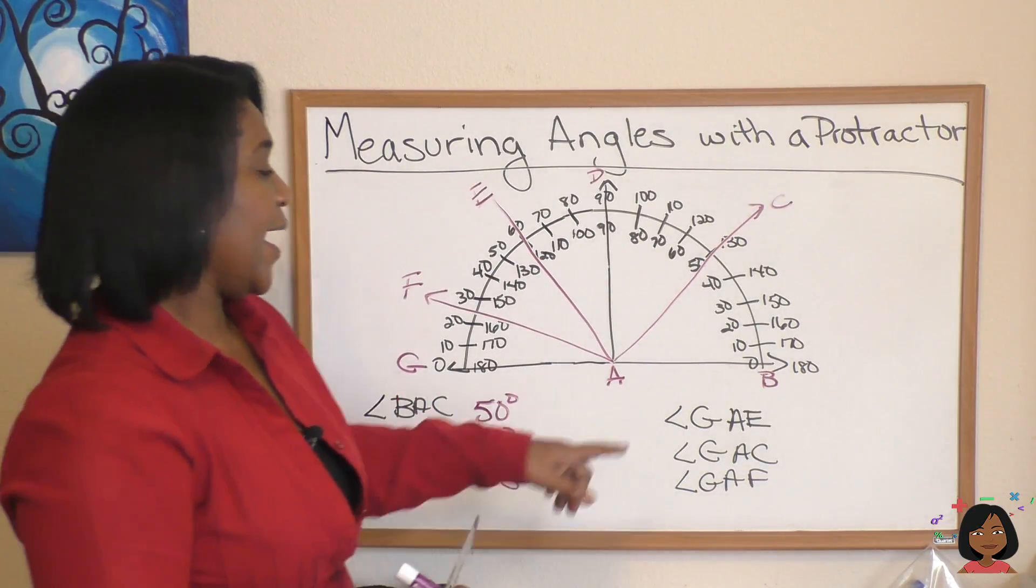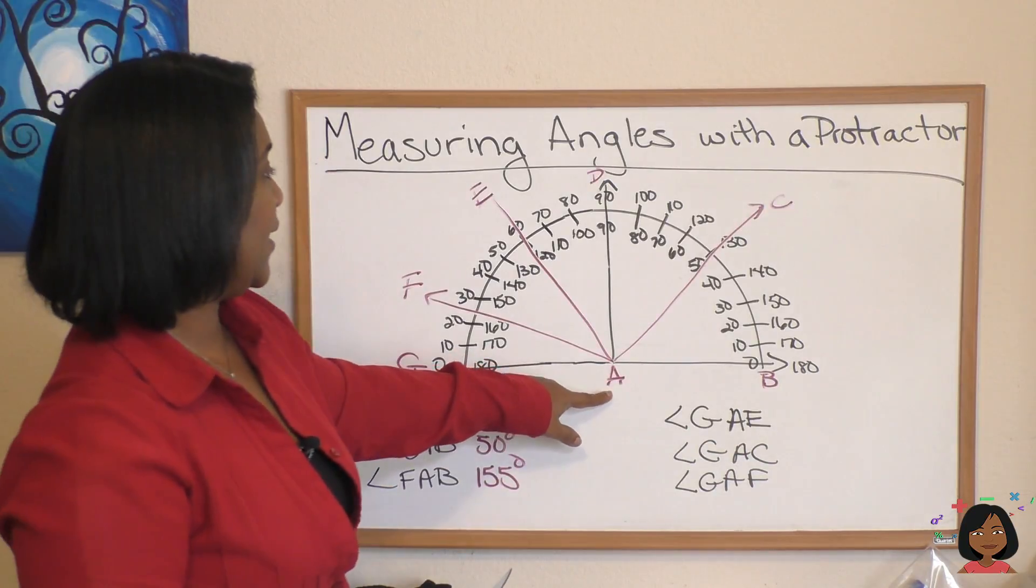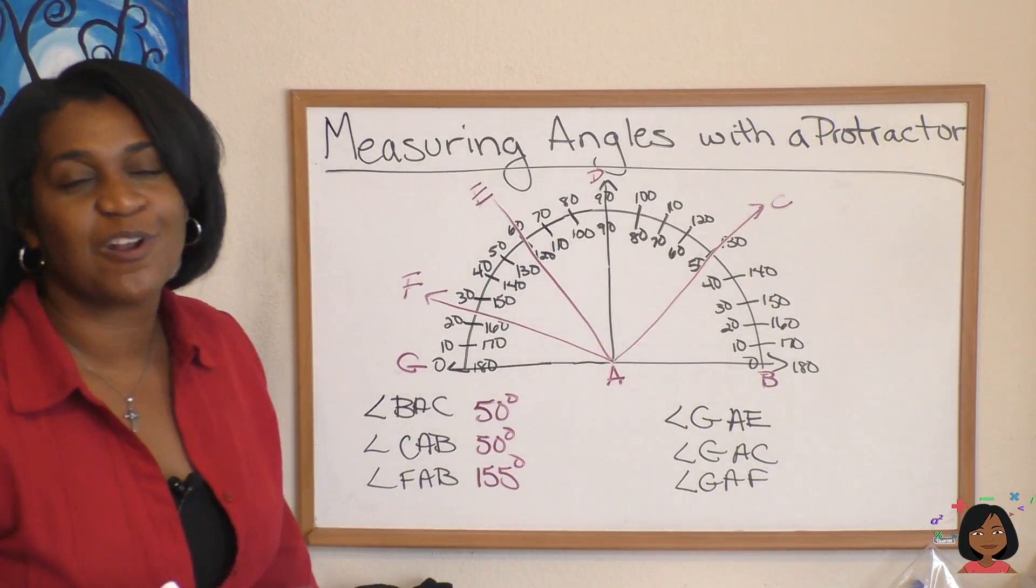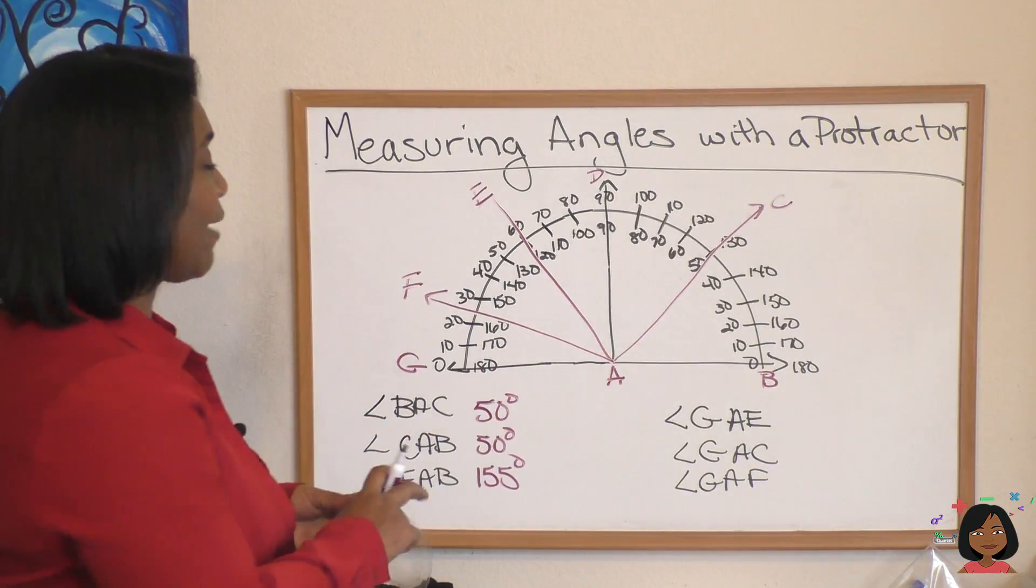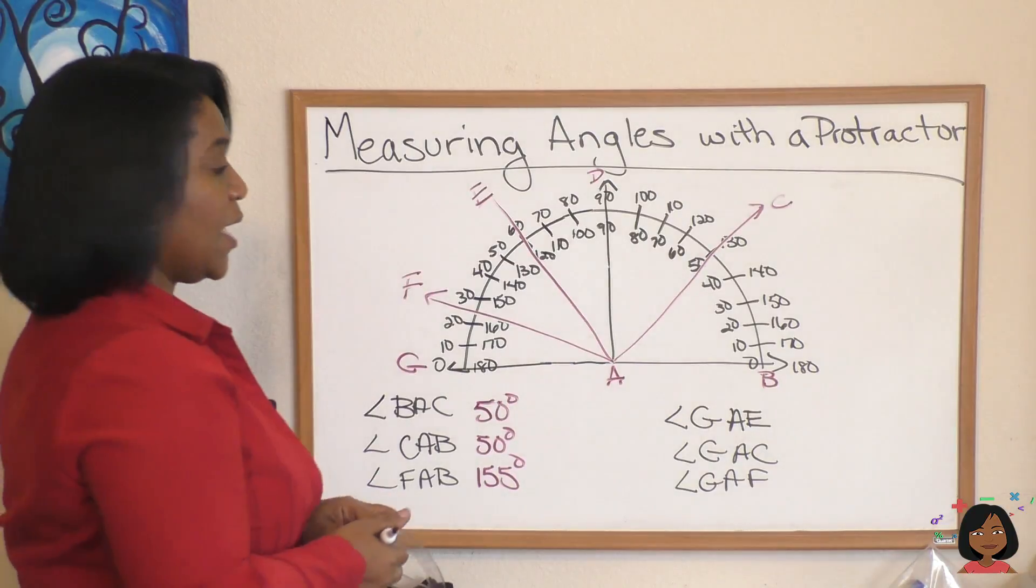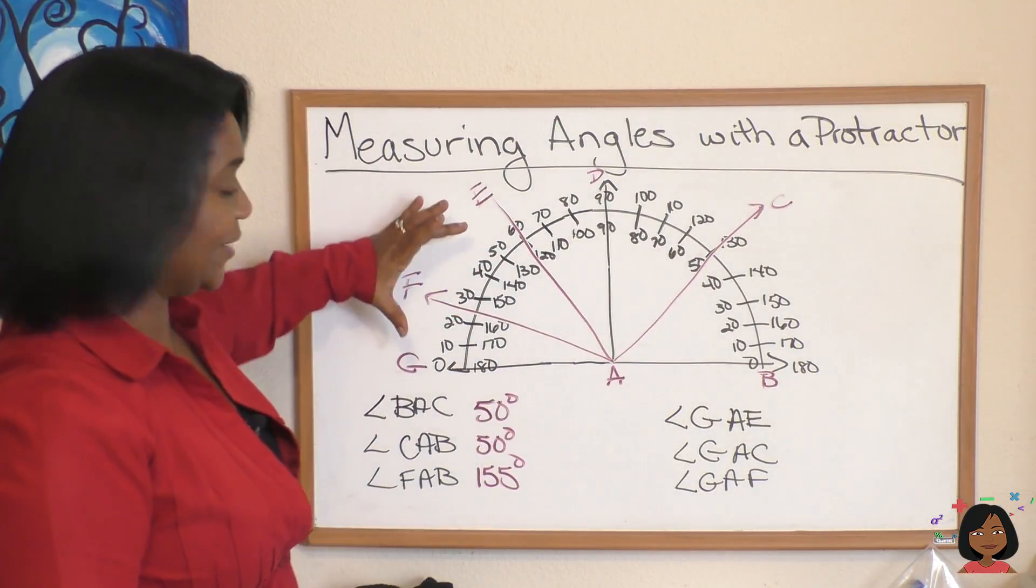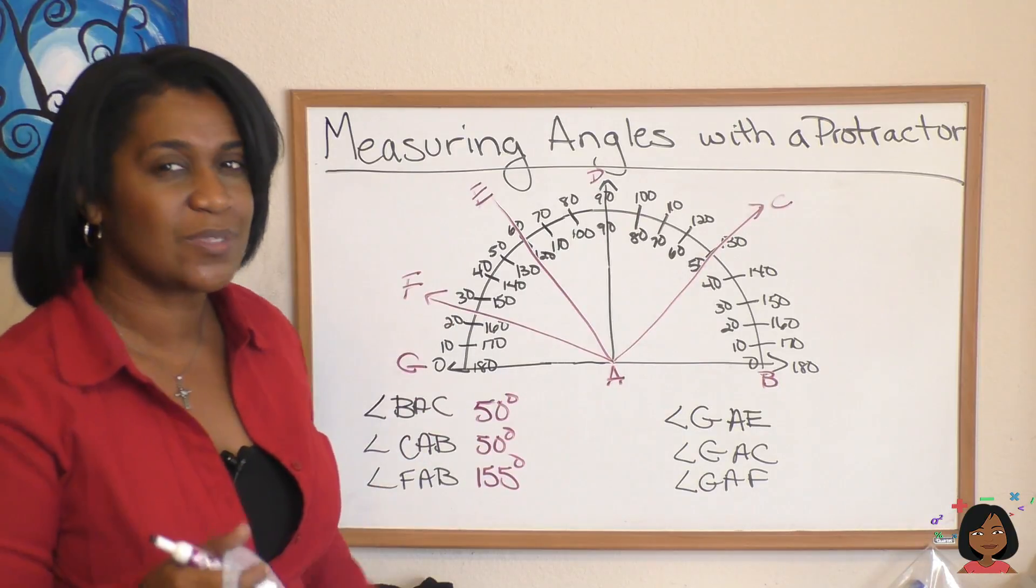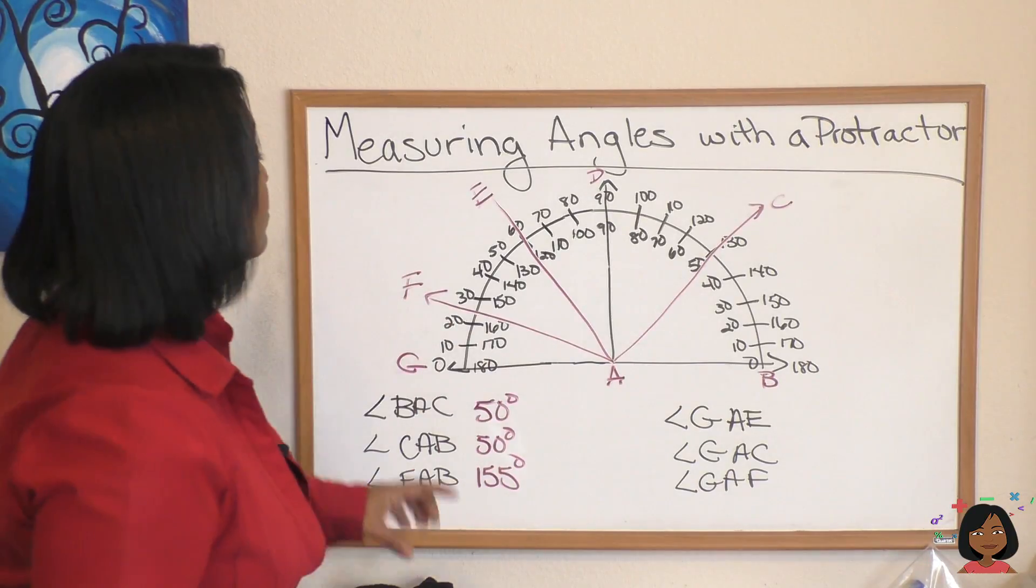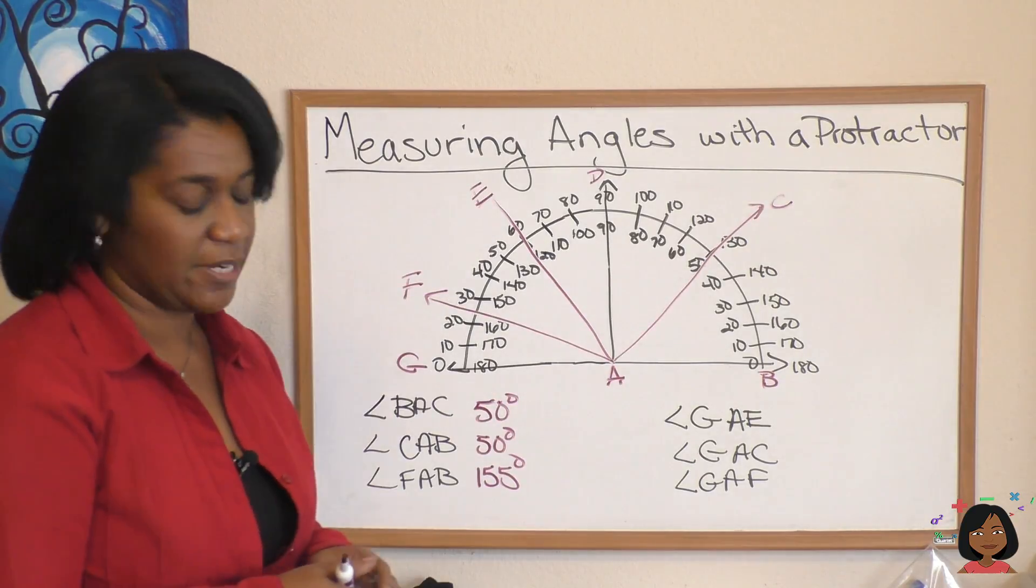Now let's look at angle GAE. Now this is one of those instances where we would use the other side of the protractor because it starts here and opens up this way. What kind of angle is this? It's less than 90 degrees, so it is an acute angle. Our measurement is going to be, we're using the outside, 60 degrees.